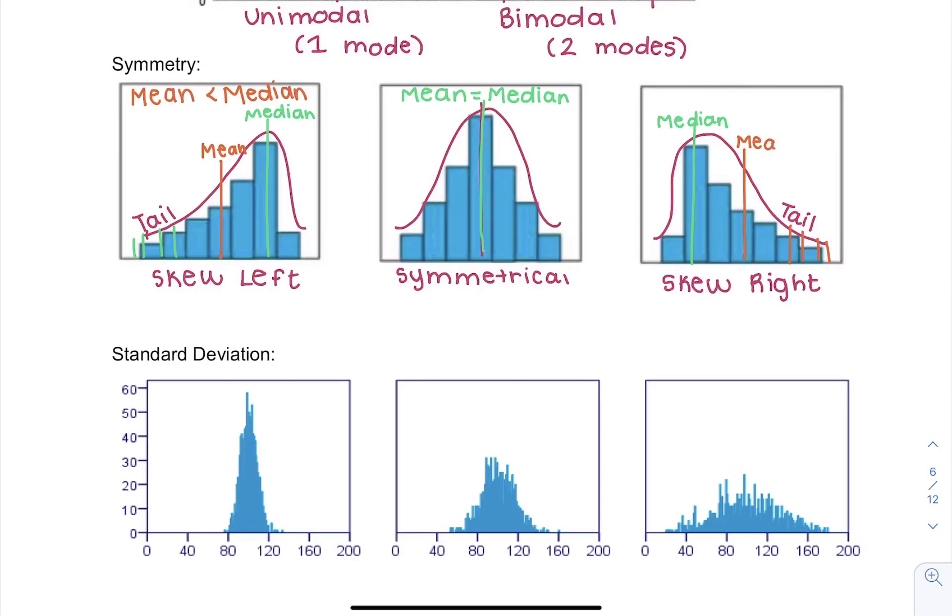These few kids in the tail are going to bring the mean up towards them. They're going to pull it towards them. So think about this as like a tug of war kind of pulls it away from the median. So in this case, our mean is greater than our median because it gets pulled towards the right, or it gets skewed towards the right.